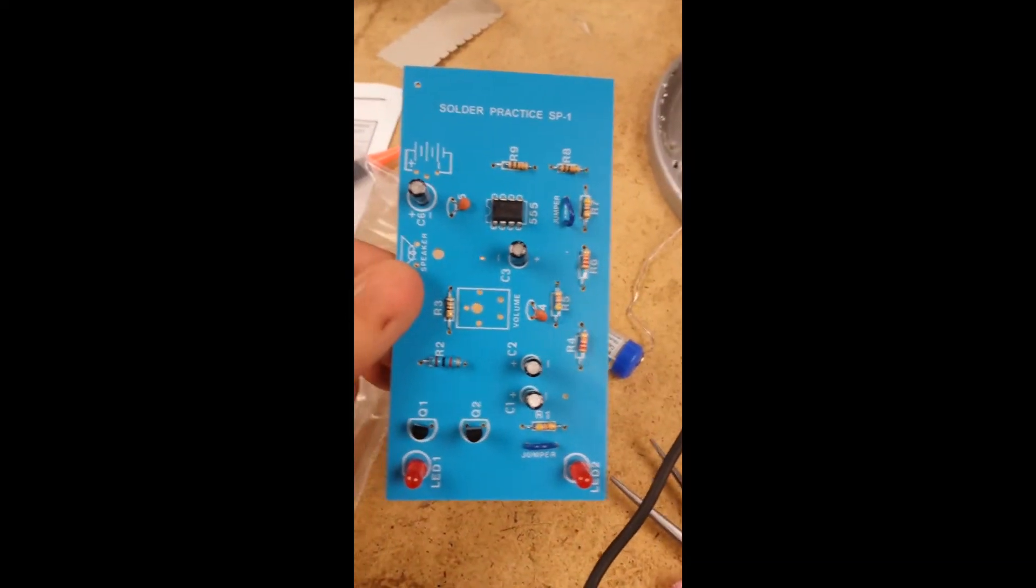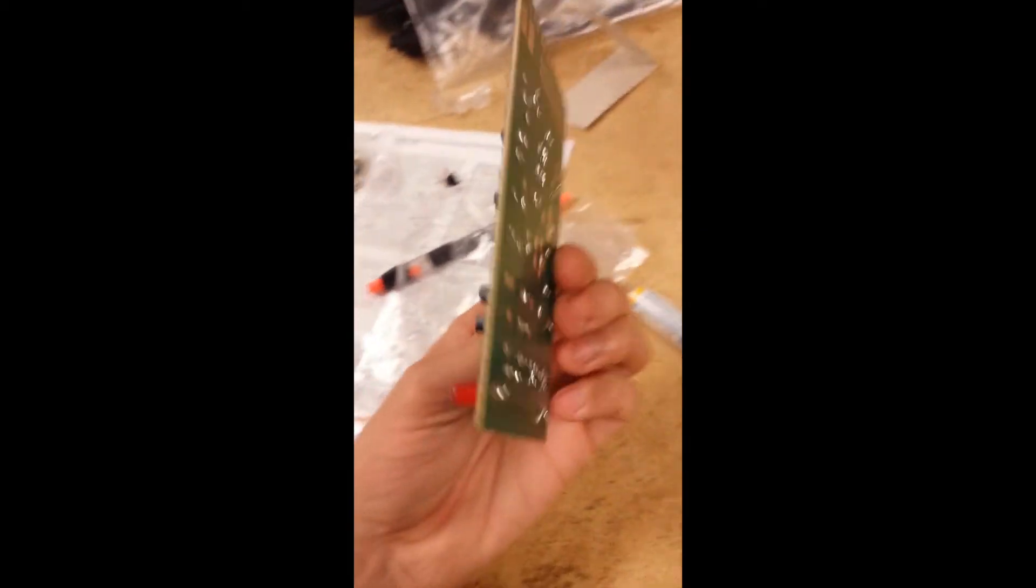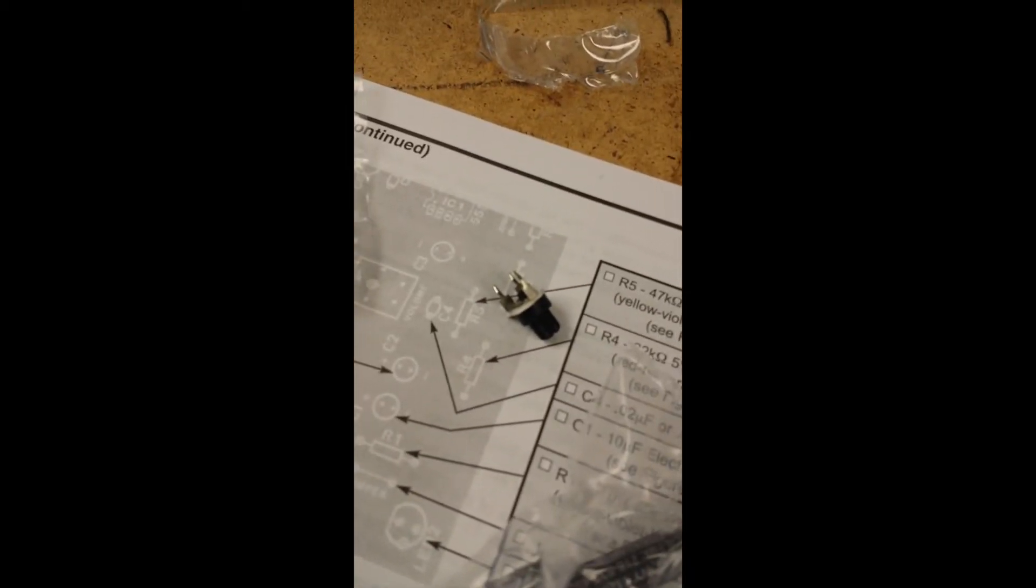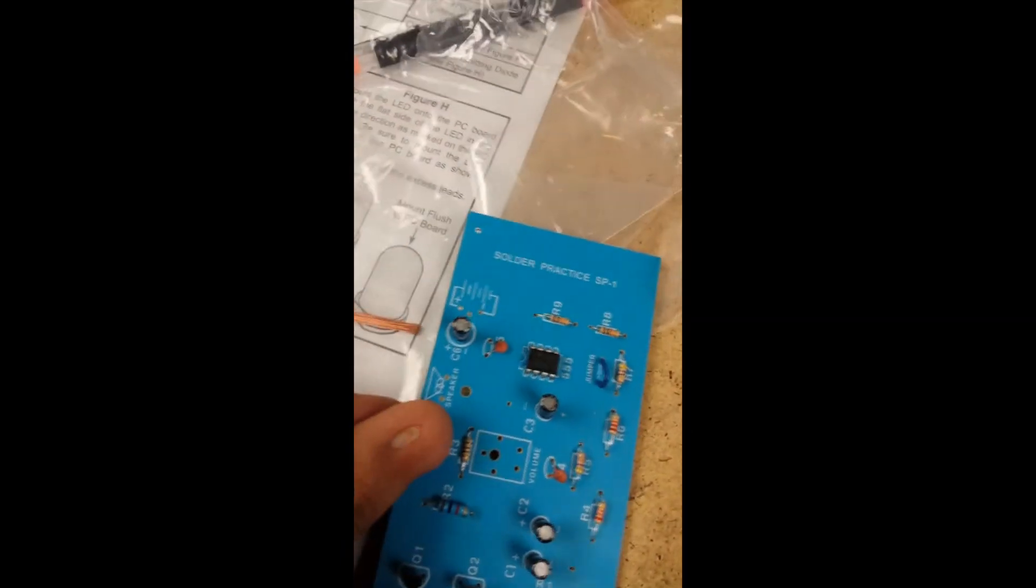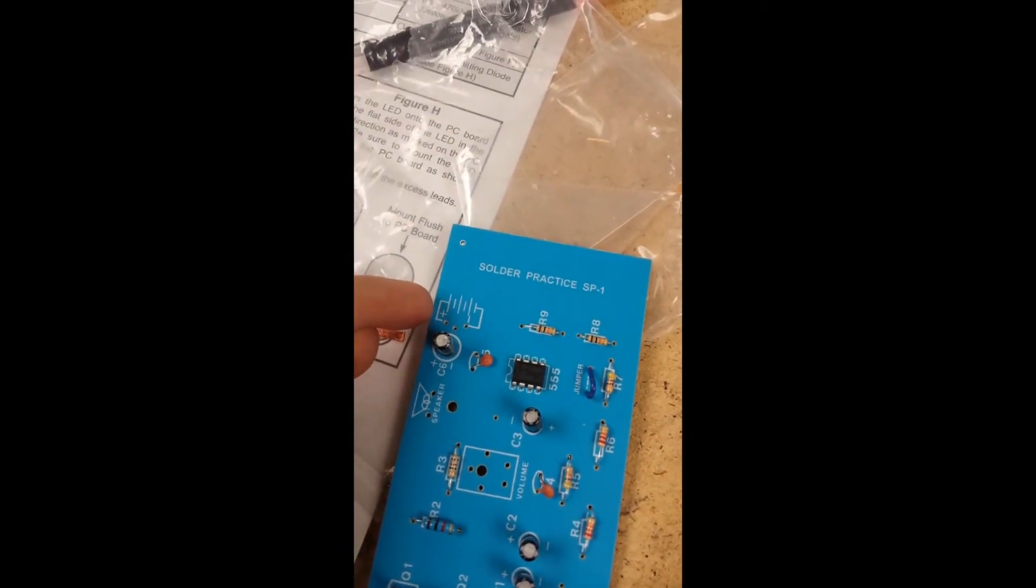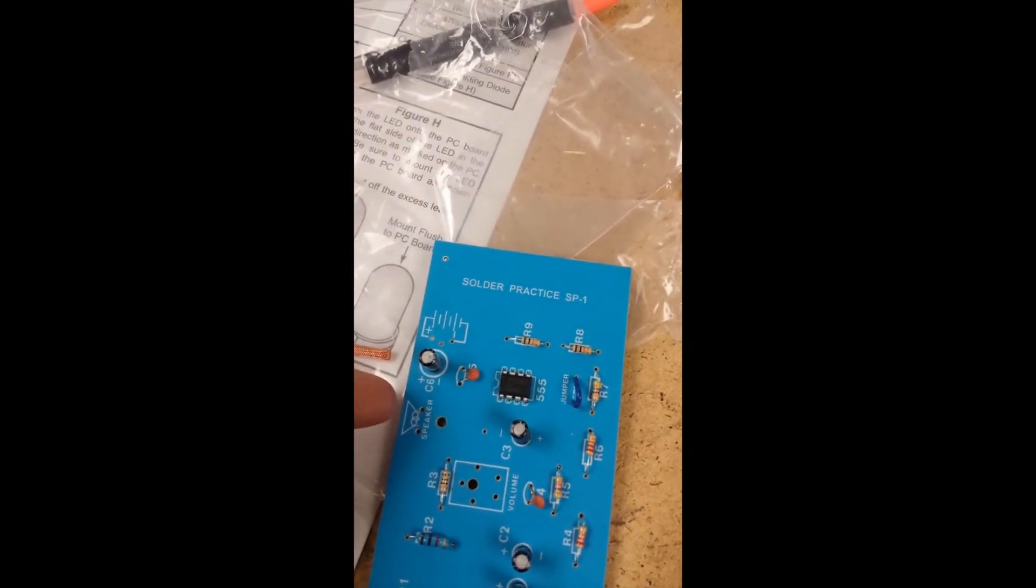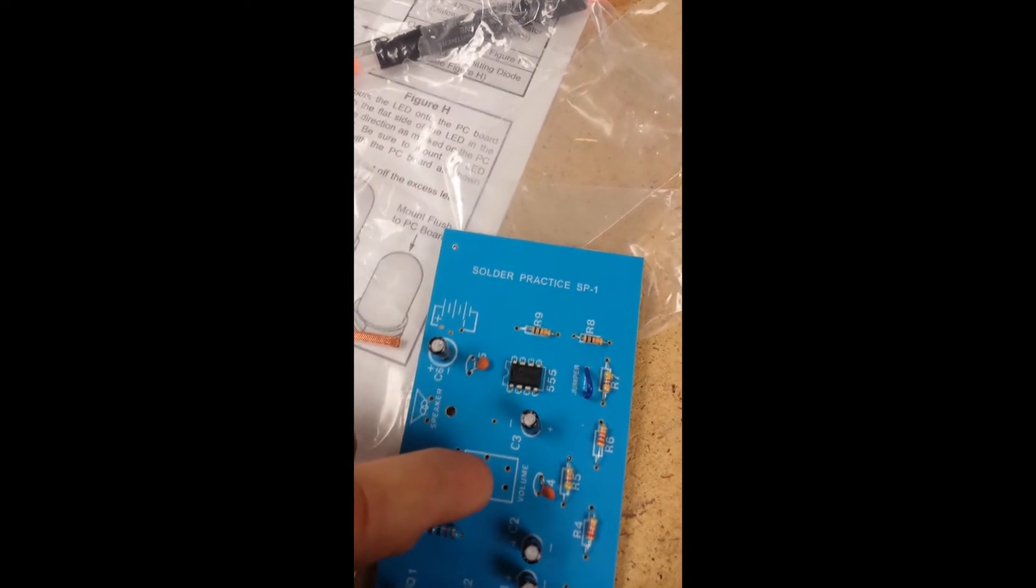This is a checkup on my progress. I have just about everything done and soldered. All I need now is to put the speaker, the battery cords, and the volume. And then this is where the batteries will go, the speaker, and the volume, right over here.